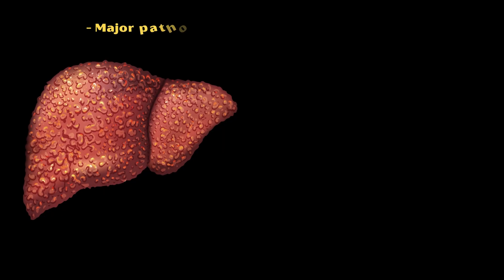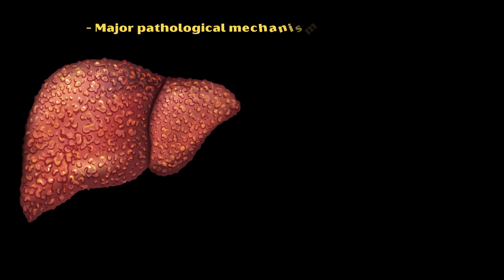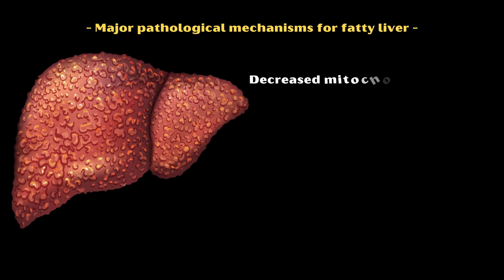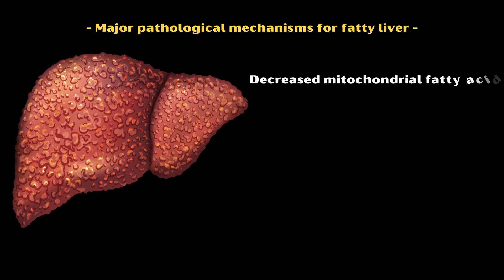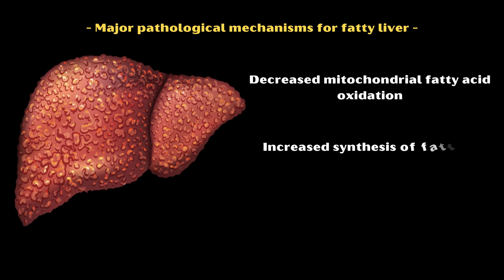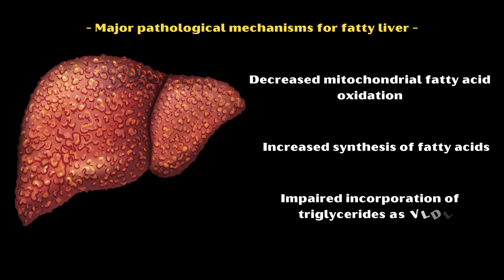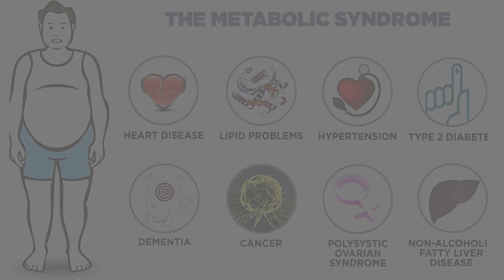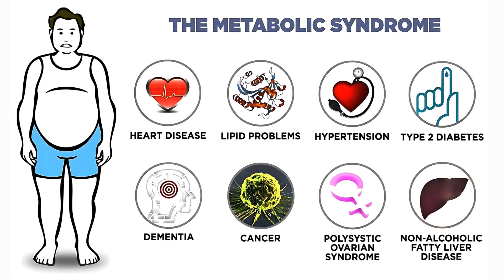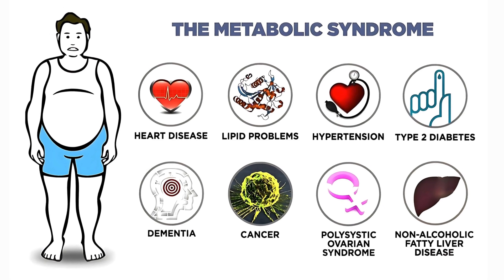Major pathological mechanisms for fatty liver include decreased mitochondrial fatty acid oxidation, increased synthesis of fatty acids, and impaired incorporation of triglycerides as VLDL.